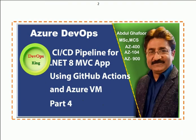So in today's Part 4, I shall explain the CI/CD pipeline for a dotnet 8 MVC app using GitHub Actions and Azure VM — Part 4.